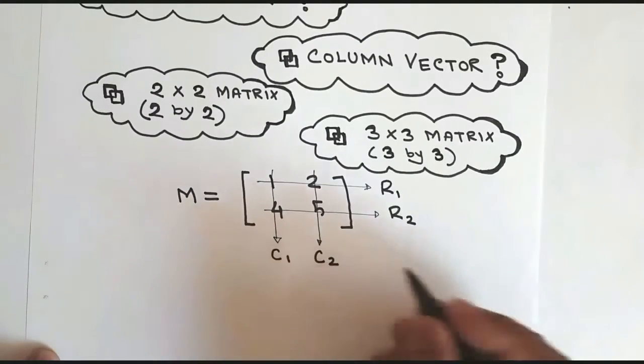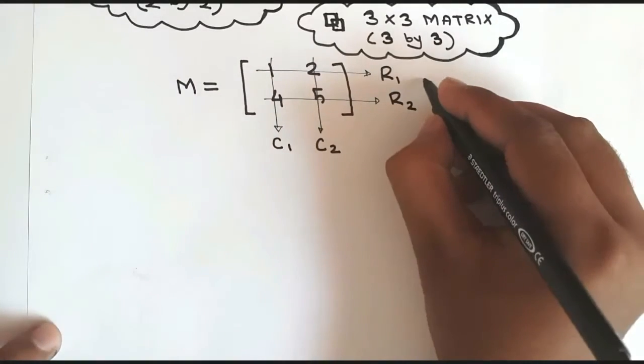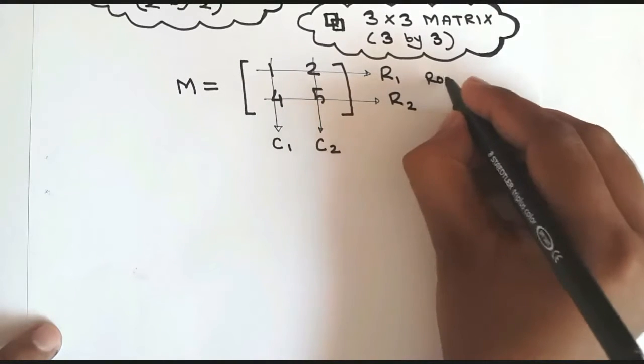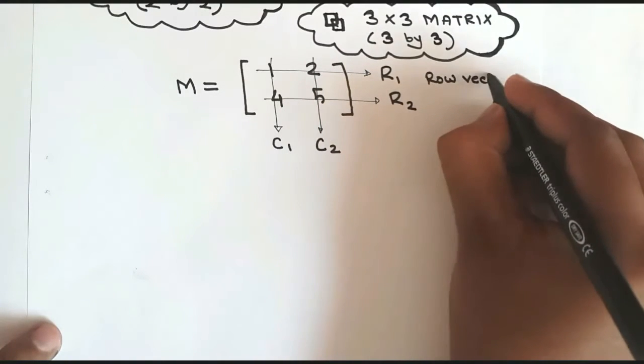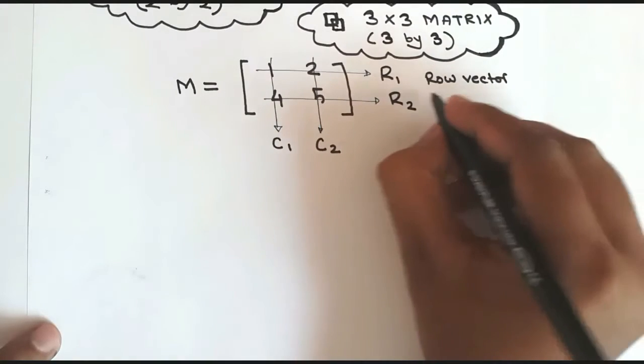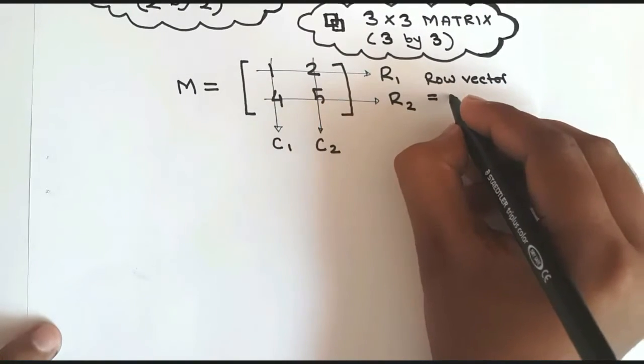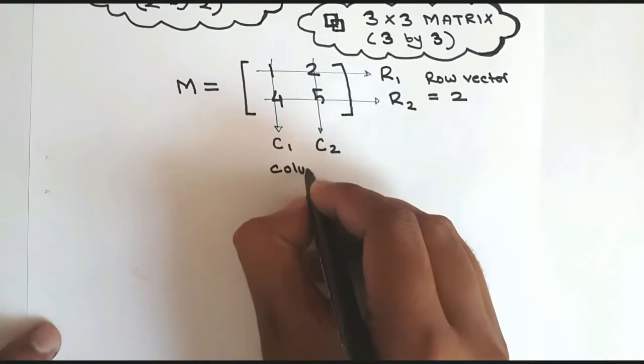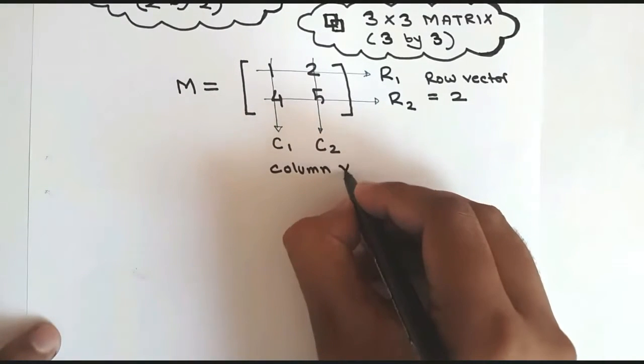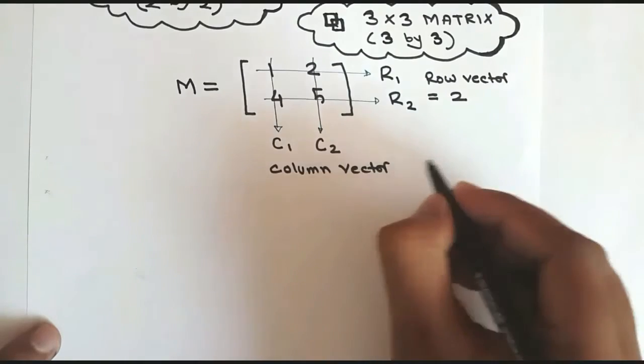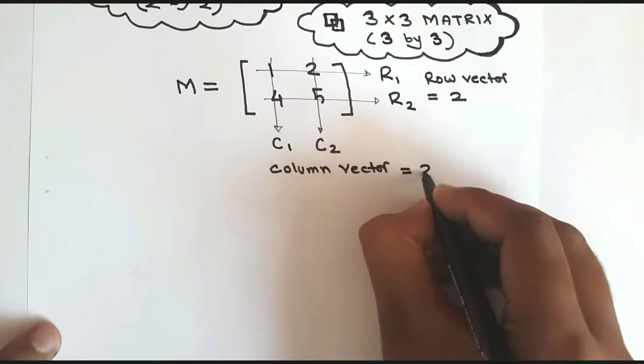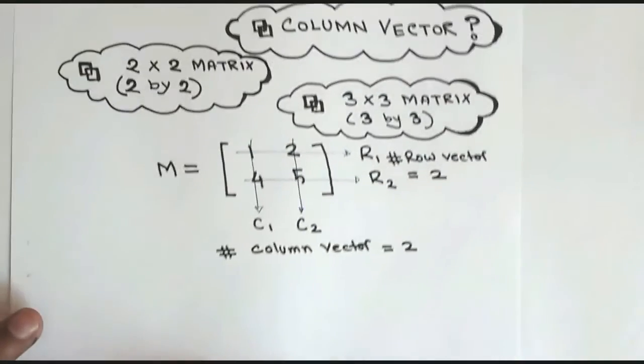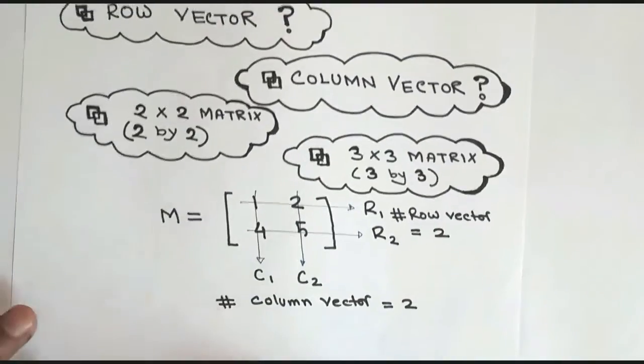So first one is column 1, so it's C1, and the second one is C2. Now we have row vector which is row vector is 2, and we have the column vector, let me write it, column vector which is also 2.